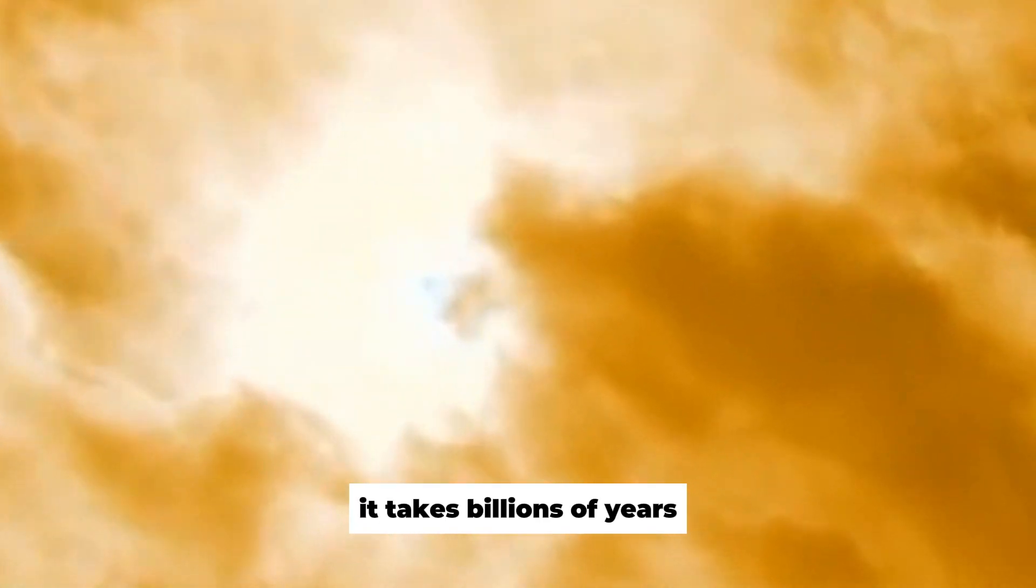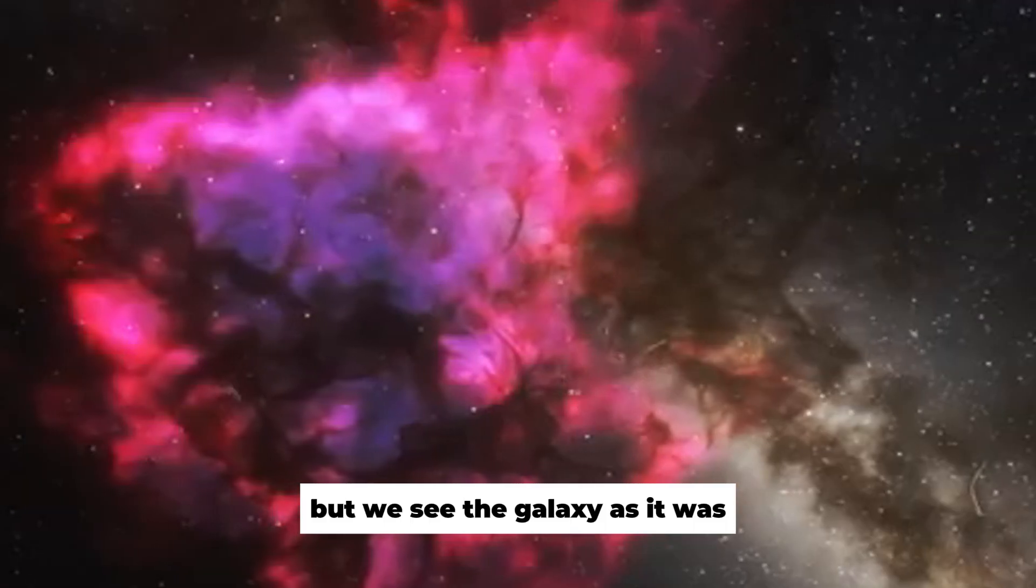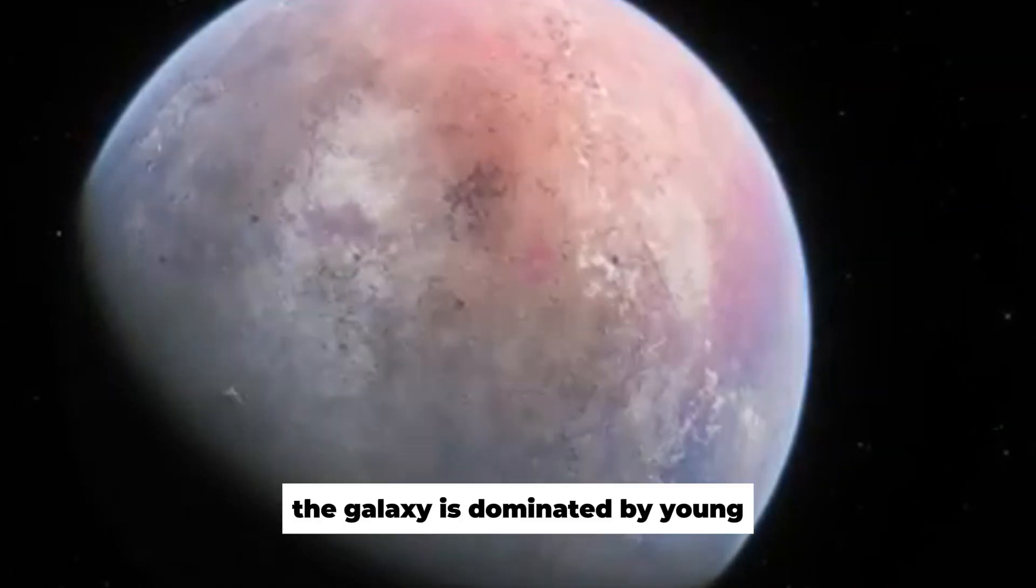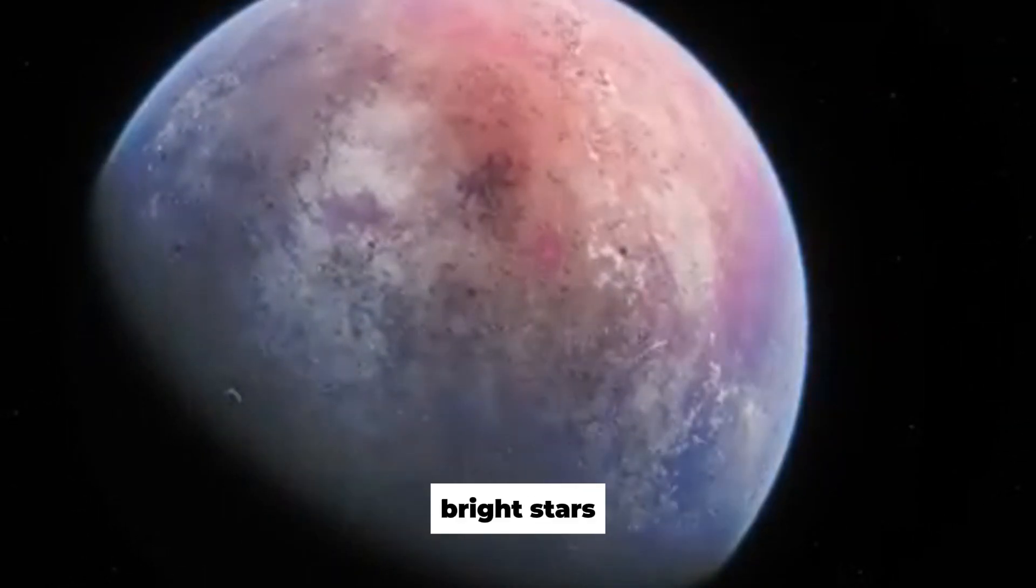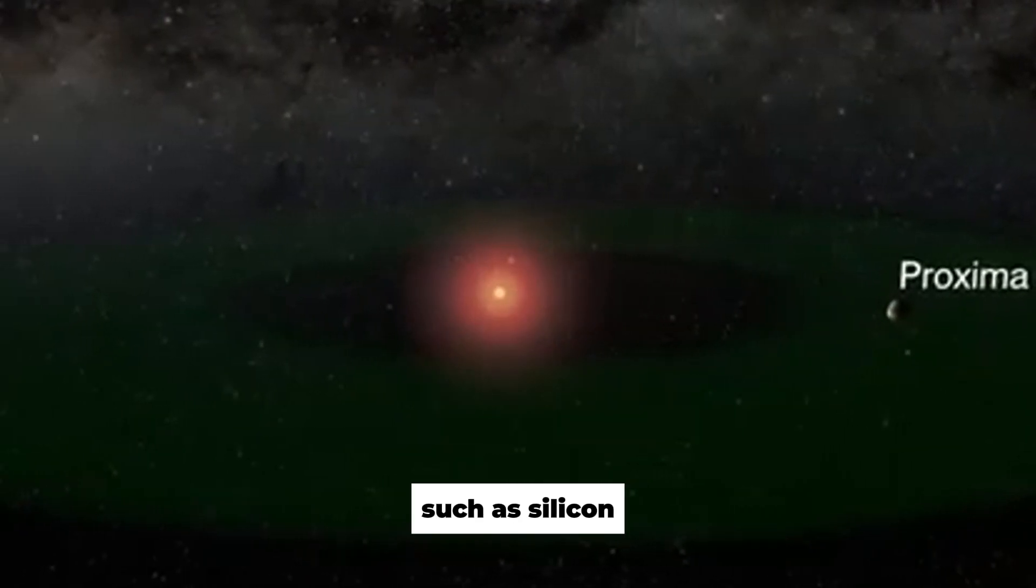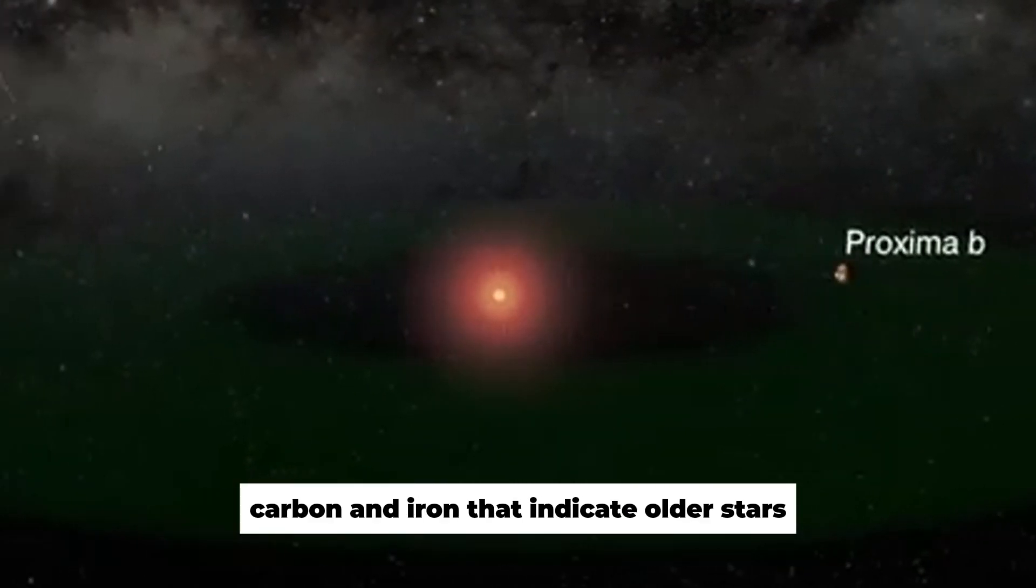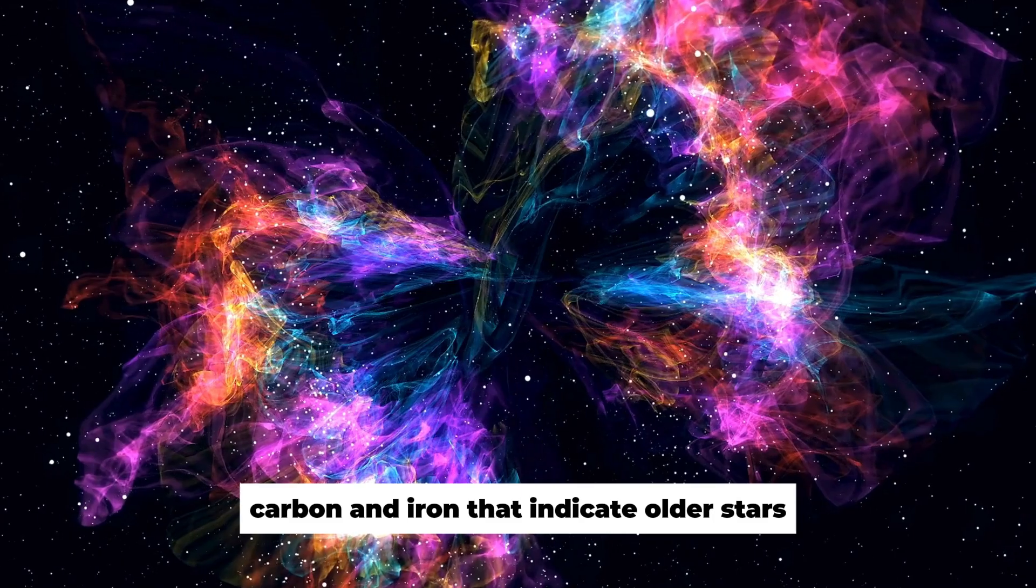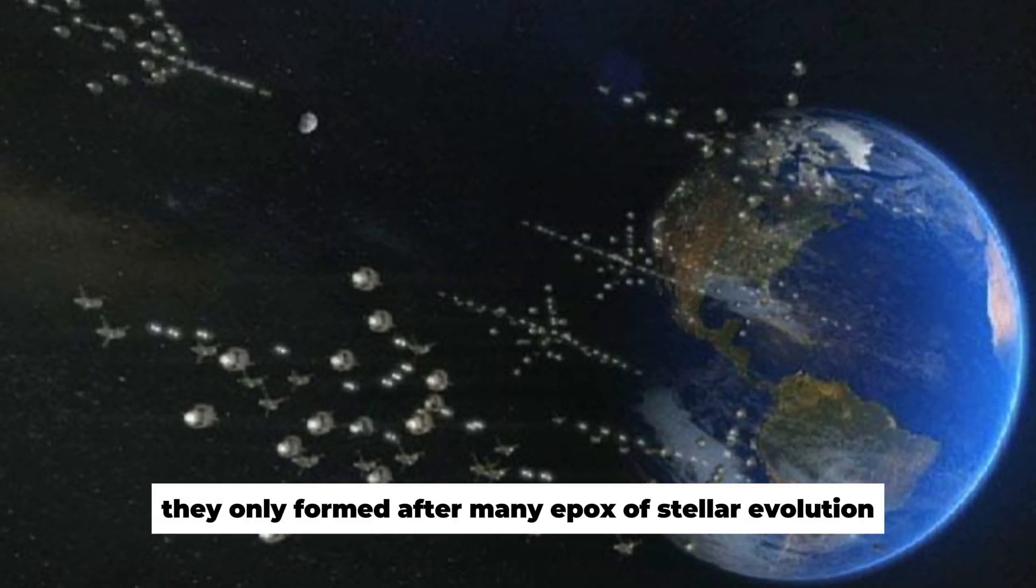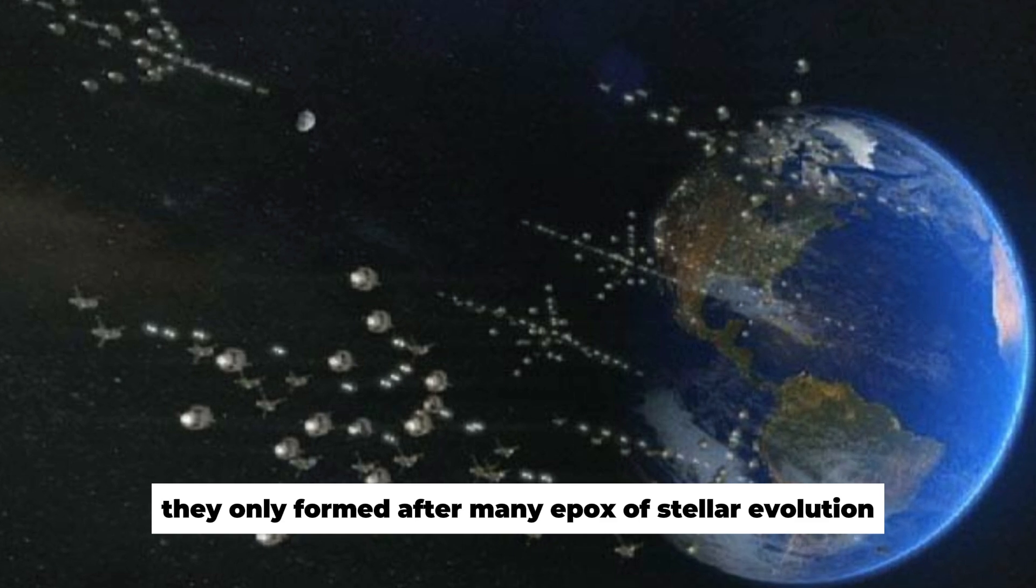It takes billions of years for galaxies to reach this level of maturity, but we see the galaxy as it was 510 million years after the Big Bang. The galaxy is dominated by young bright stars, and researchers have found specific elements such as silicon, carbon, and iron that indicate older stars. These elements are not typical of the first stars. They only formed after many epochs of stellar evolution.